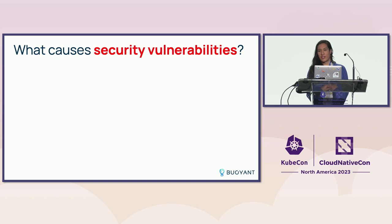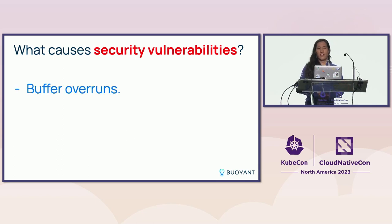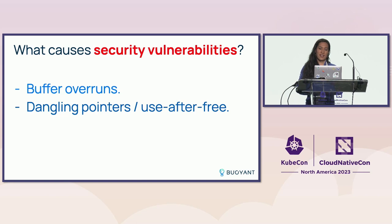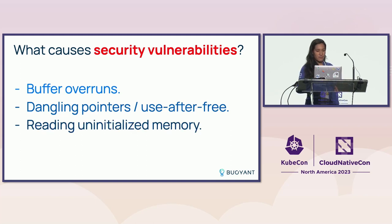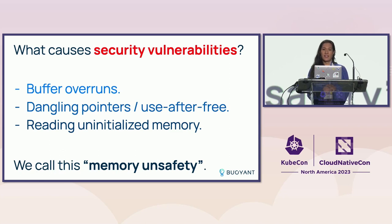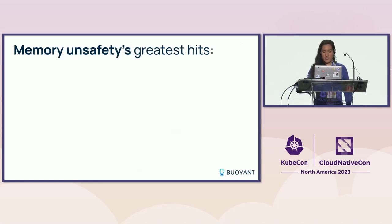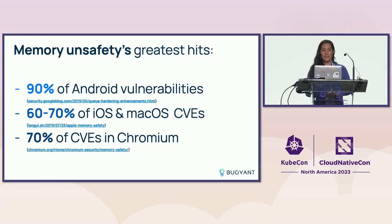When talking about Linkerd being secure, what types of things cause security vulnerabilities? There's buffer overruns — accessing memory outside valid bounds. There's dangling pointers or use-after-free — dereferencing a pointer after it's no longer valid. And reading uninitialized memory. These are all examples of memory unsafety. It turns out a surprising majority of security vulnerabilities are due to memory unsafety: 90% of Android vulnerabilities, 60-70% of iOS and macOS CVEs, and 70% of CVEs in Chromium are all due to memory unsafety in one form or another.